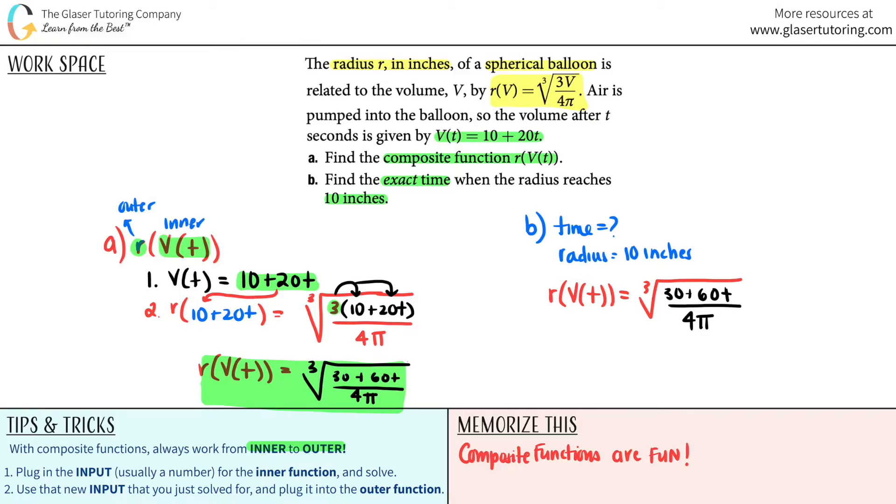Now we have basically two variables here. We have the t, which is the time. And we have this whole junk, which is basically just the outer function. And the outer function is an r. So that means that this is a radius. So I can just say that this is radius. Now it makes it much simpler.